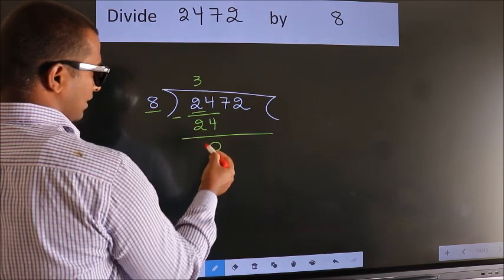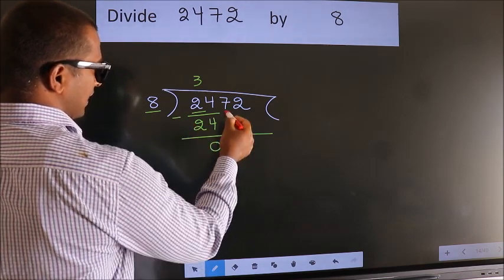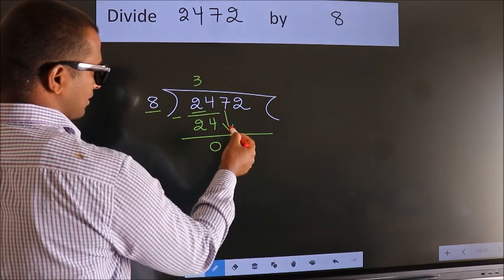Now, we should subtract. We get 0. After this, bring down the beside number. So, 7 down.